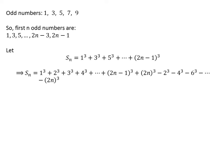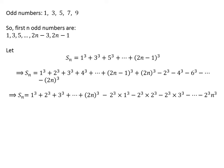Since cube of 2 is a factor of every cube of an even number, we can write Sn equal to cube of 1 plus cube of 2 plus cube of 3, and so on up to cube of 2n, minus cube of 2 times (cube of 1 plus cube of 2 plus cube of 3, and so on up to cube of n), taking the common factor out.